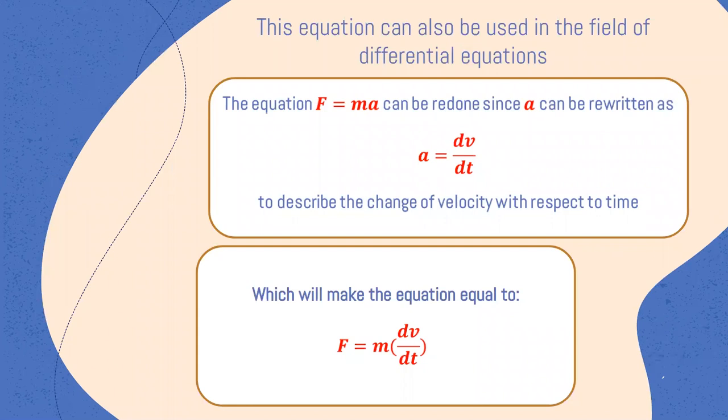The equation F equals ma can be rewritten since a can be expressed as a equals dv over dt to describe the change of velocity with respect to time, which makes the equation equal to F equals m times dv over dt.